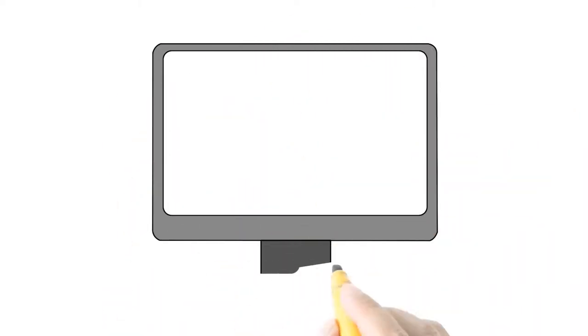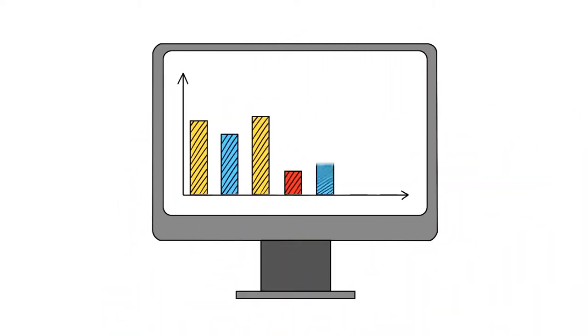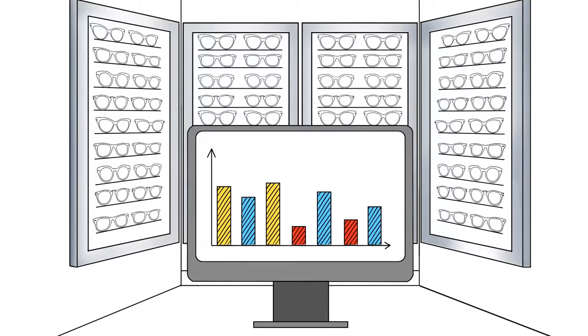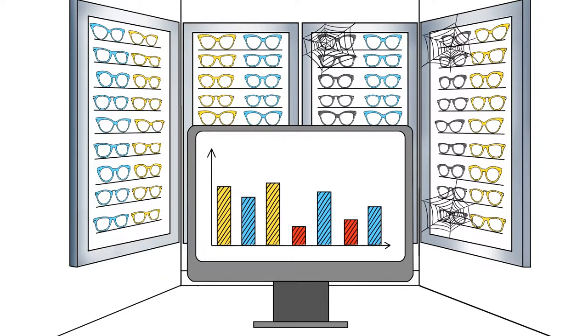However, specific sales data should determine what is on your valuable frame boards. FrameTurn powerfully analyzes your optical sales data, showing you which brands are hottest sellers, which brands set you apart, and which simply aren't working.